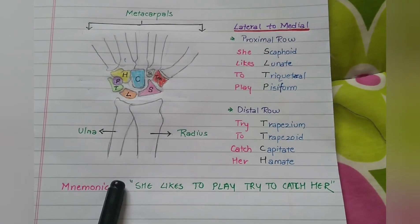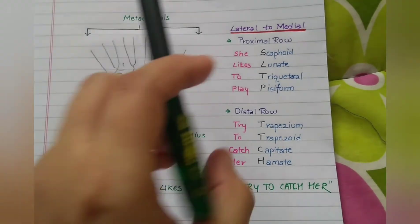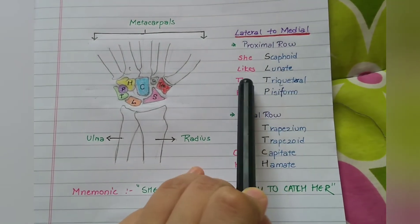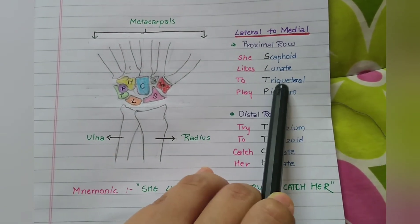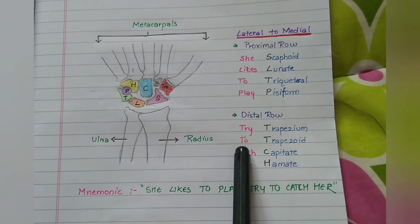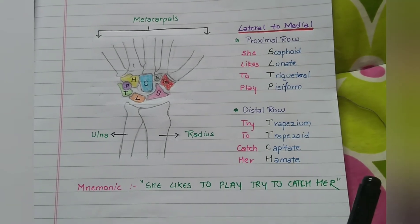The simple mnemonic to remember the carpal bones is she likes to play, try to catch her. Where S of she stands for scaphoid, L stands for lunate, T stands for triquetral, P stands for pisiform, T stands for trapezium, T stands for trapezoid, C stands for capitate, H stands for hamate.